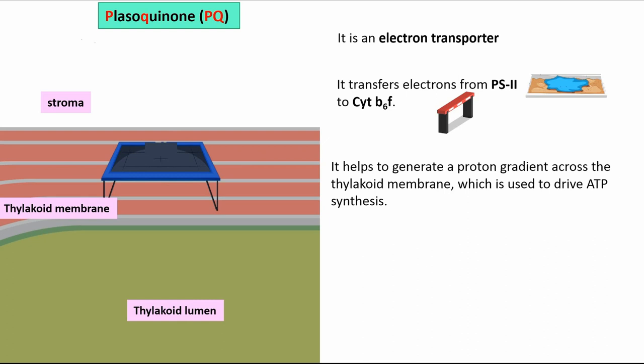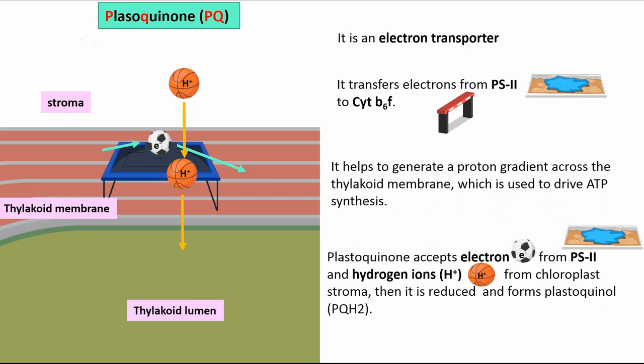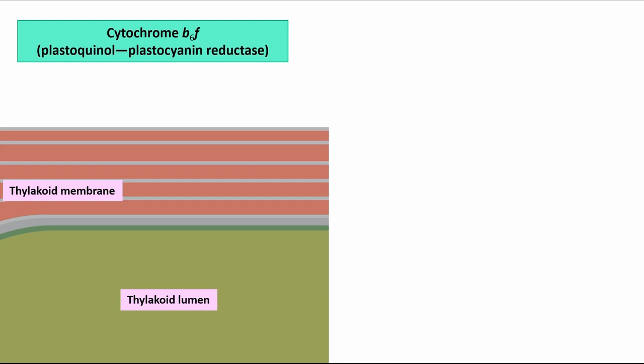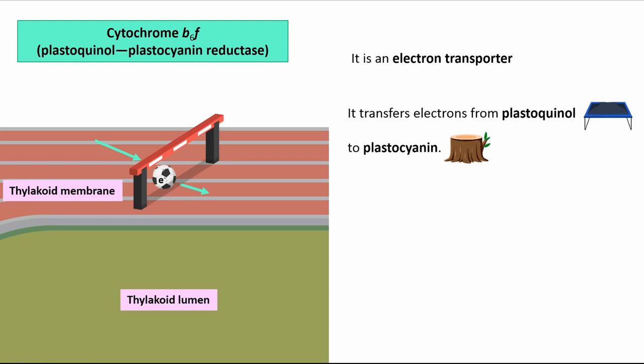Plastoquinone accepts electrons from Photosystem II and hydrogen ions from the chloroplast stroma. Then it is reduced and forms plastohydroquinol. Cytochrome B6F, or plastohydroquinol-plastocyanin reductase, is an electron transporter that transfers electrons from plastohydroquinol to plastocyanin. Cytochrome B6F is responsible for both non-cyclic electron flow and cyclic electron flow.